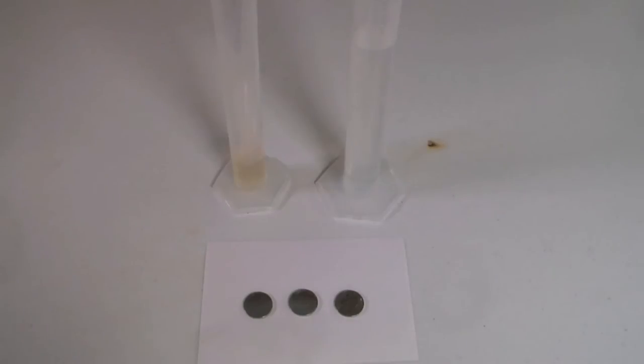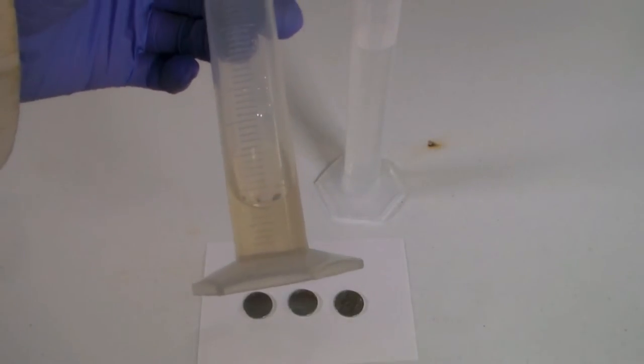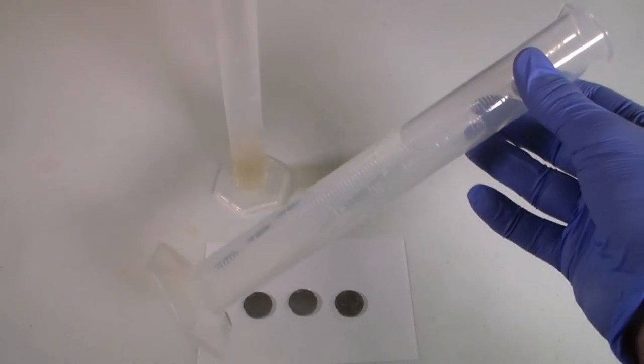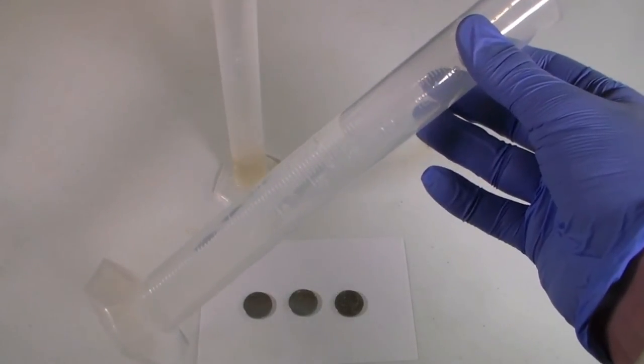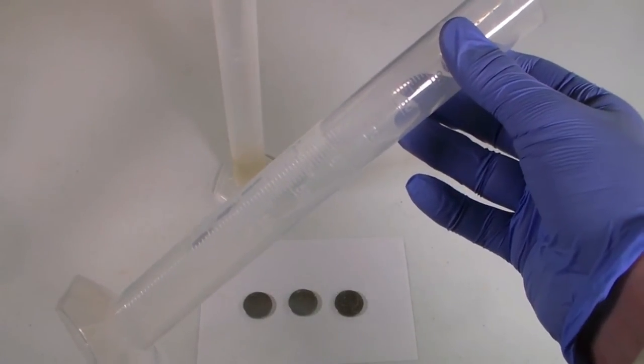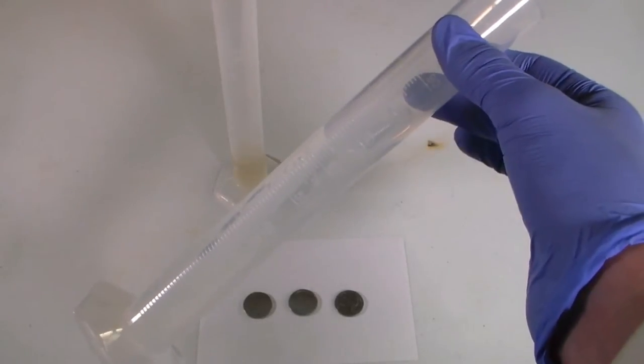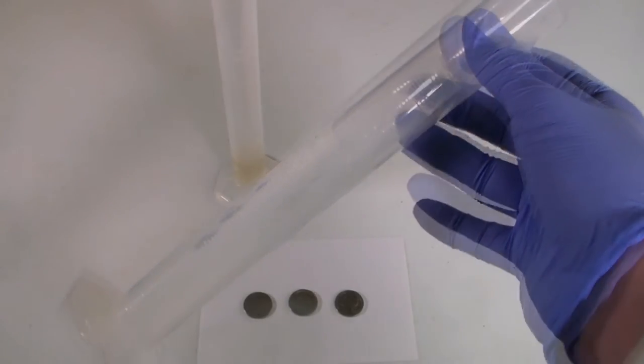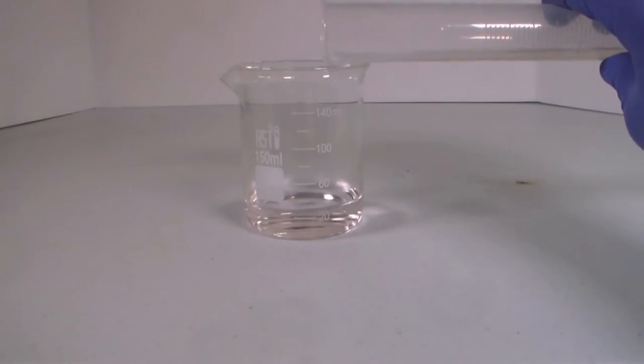Since I wanted to dissolve three nickels, I measured out 13 milliliters of sulfuric acid and 75 milliliters of hydrogen peroxide. My peroxide is 15%, but if you have 30% hydrogen peroxide, you will only need 35 milliliters.